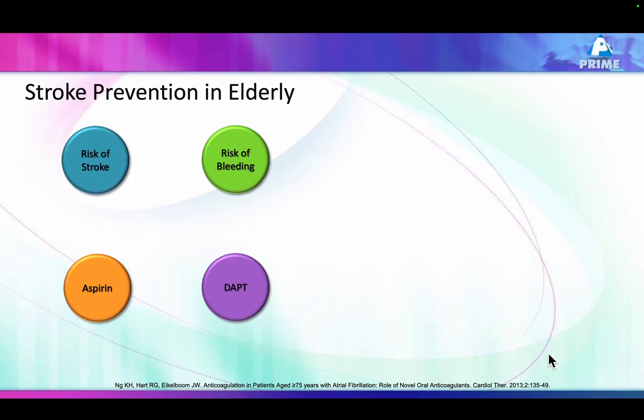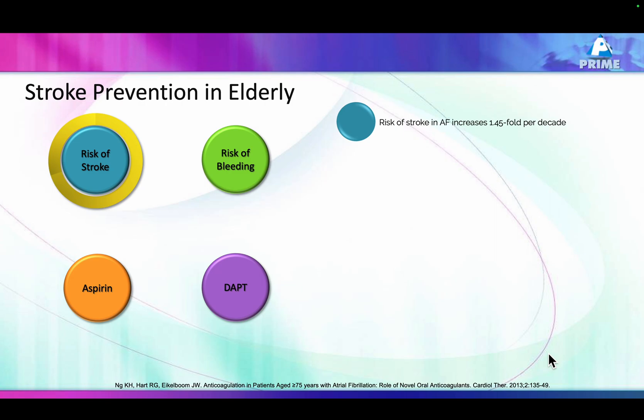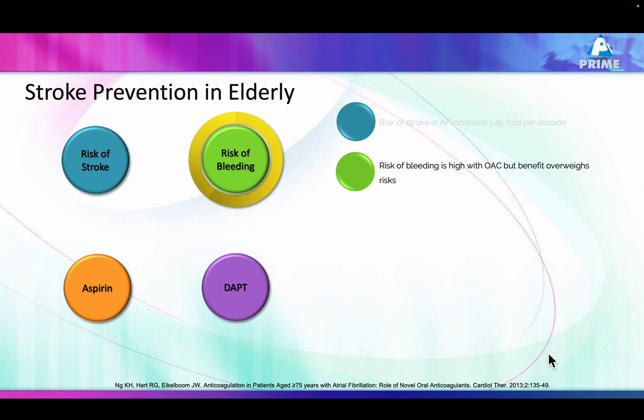The risk of stroke in the elderly is far higher than in younger people — about 1.5-fold more, that's 50% more incidence of stroke. The risk of bleeding is also more, but the risk of bleeding is less than the risk of stroke. So the use of NOACs outweighs the risk of bleeding in preventing stroke, even in patients aged more than 80.